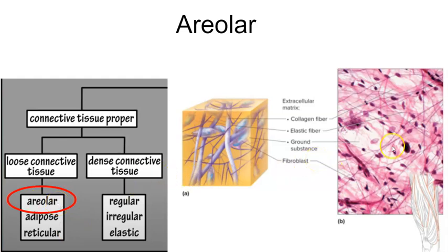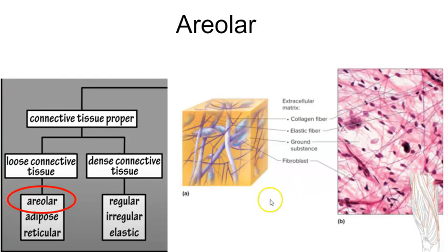Areolar tissue looks like the picture we saw before — the fibers and cells are loosely packed. The fibroblasts are the purple cells. The thick pink fibers are collagen, the smaller fibers following the arrow are elastic fibers, and the rest is ground substance. Everything that's not a cell is part of the extracellular matrix.